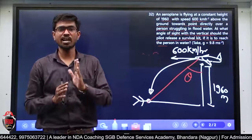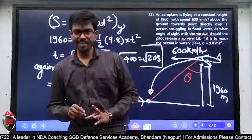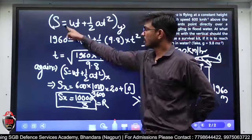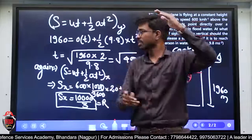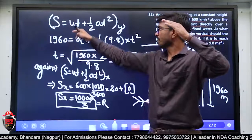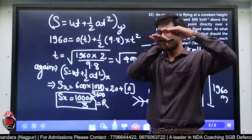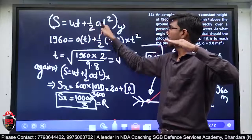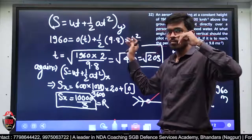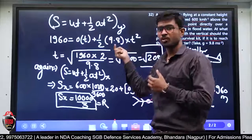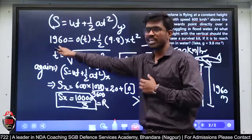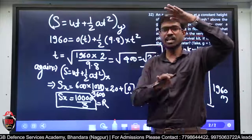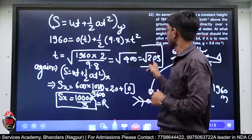s = ut + ½at² equation use करेंगे। Displacement in y direction 1960 meter है, initial velocity in y direction नहीं — fighter plane ऐसे आ रहा है horizontally। Half acceleration 9.8 — यहाँ 9.8 ही substitute करो क्योंकि 9.8 का double 196 है, cancel out हो जाएगा। Solve करने पर time = 20 seconds मिला।